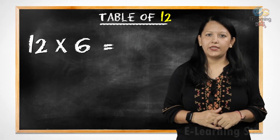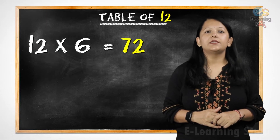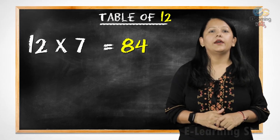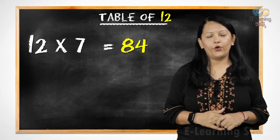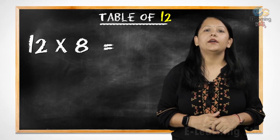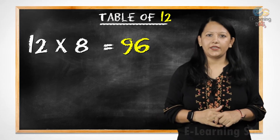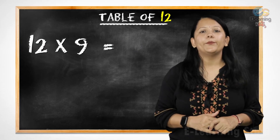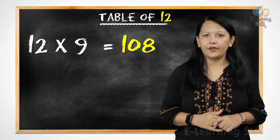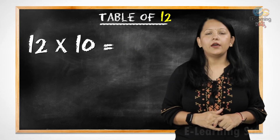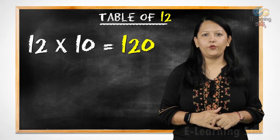12 sixes are 72. 12 sevens are 84. 12 eights are 96. 12 nines are 108. 12 tens are 120.